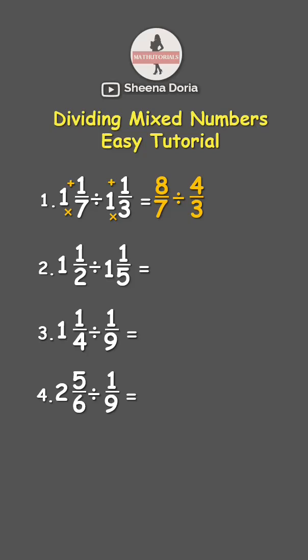Now let us divide using our shortcut, which is cross multiplication. 8 times 3 is 24, while 7 times 4 is 28. Answer, 24 over 28.